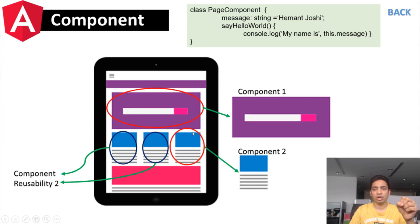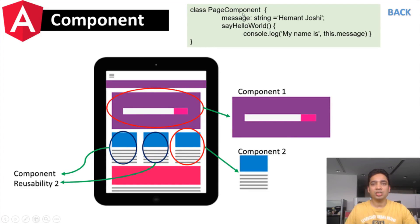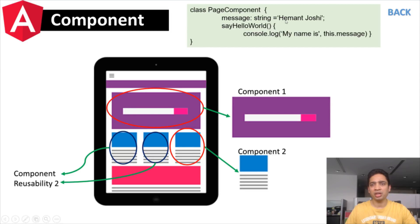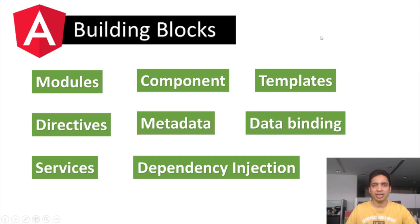A page can have many different components — for example, one section is component 1, another is component 2. This brings code reusability, so we can use a component in various other places on the page. A component class has properties and methods. When written in TypeScript, it looks very similar to how you define a class in C# or Java.